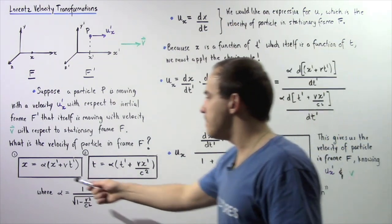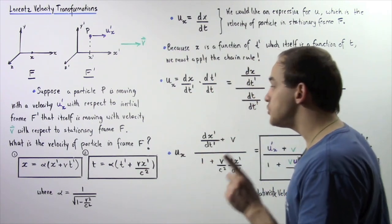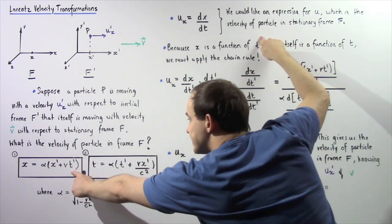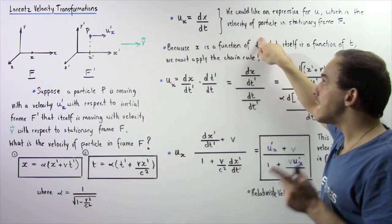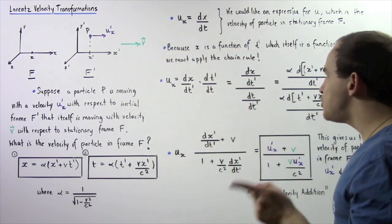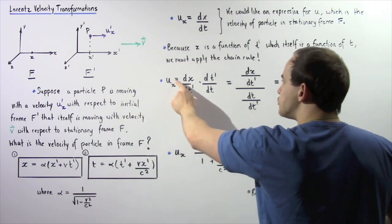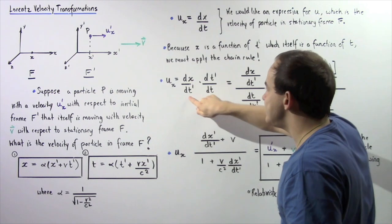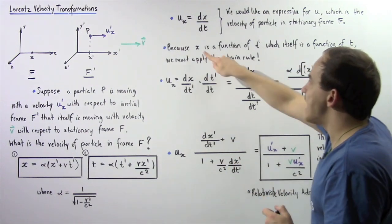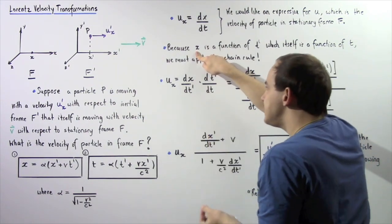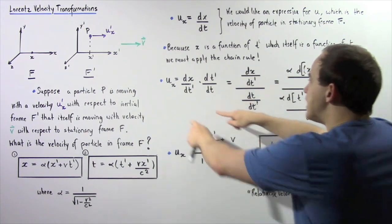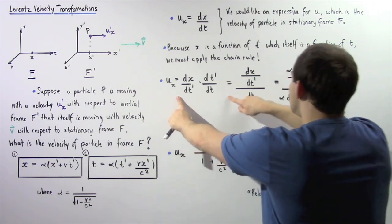Notice an interesting thing about x: x is a function of t', and t' itself is a function of t. So when we take this derivative, we have to apply the chain rule. By the chain rule, ux equals dx/dt' multiplied by dt'/dt. Since x is a function of t' and t' is a function of t, we must apply the chain rule.